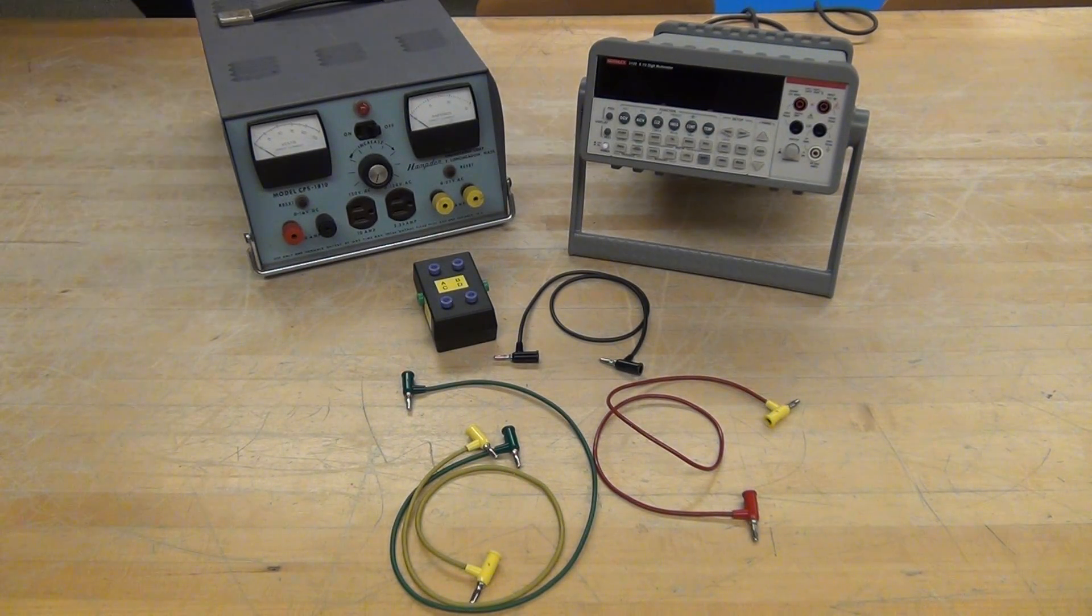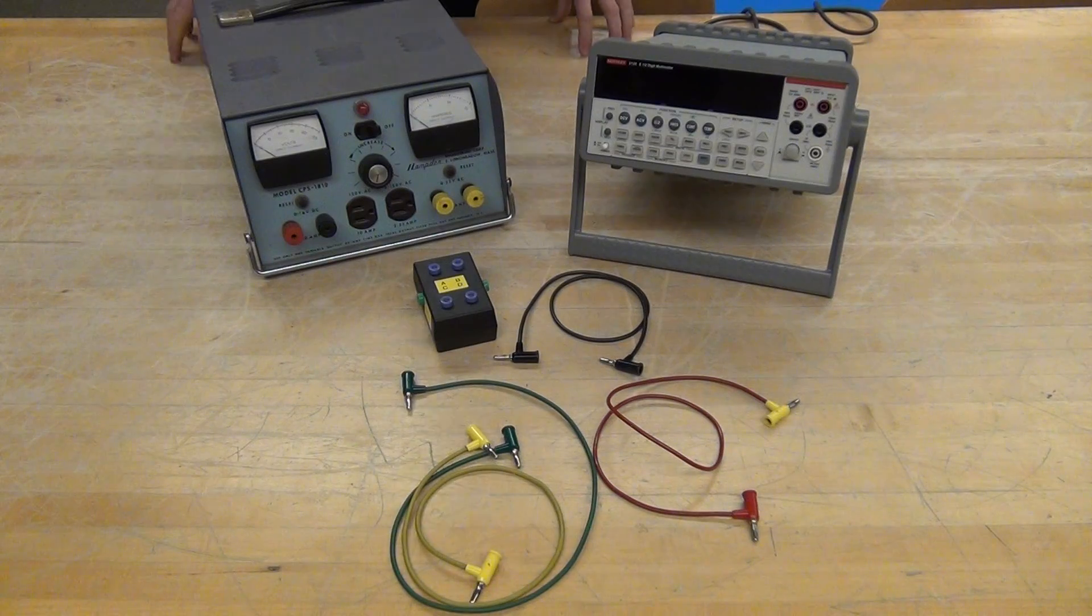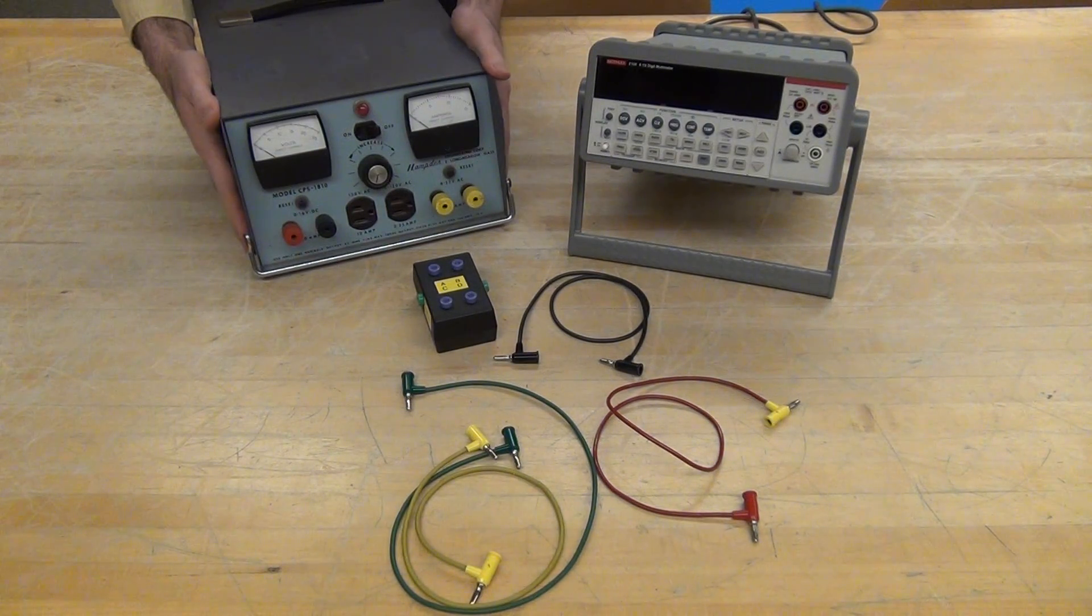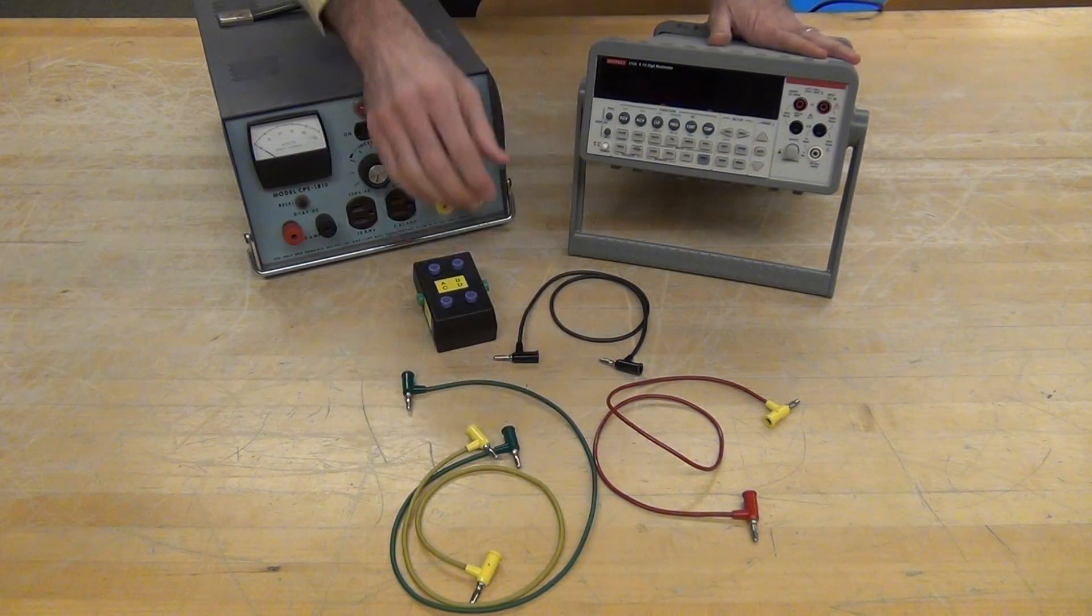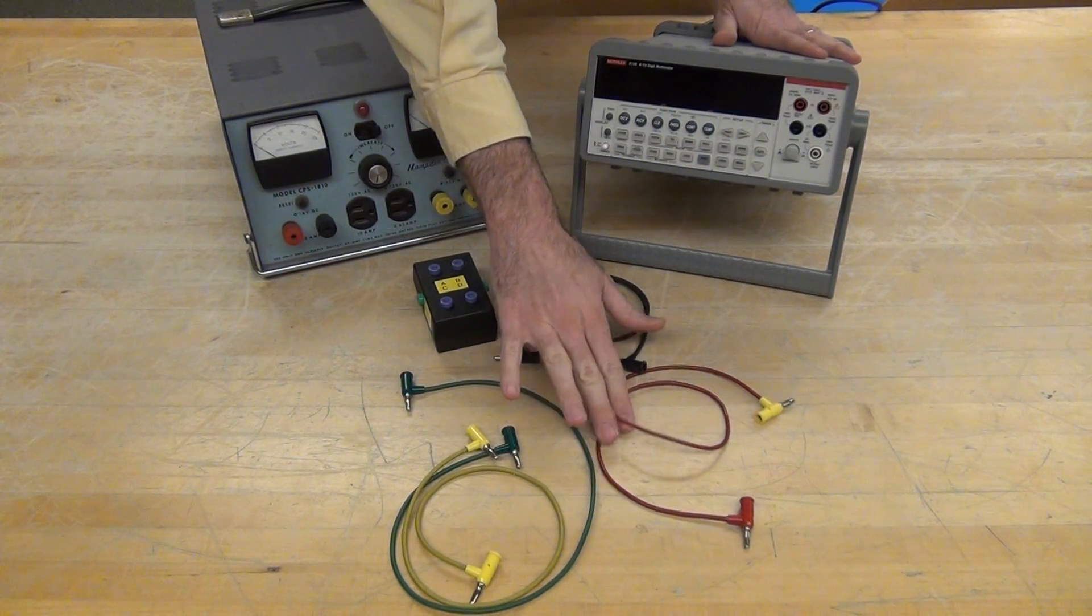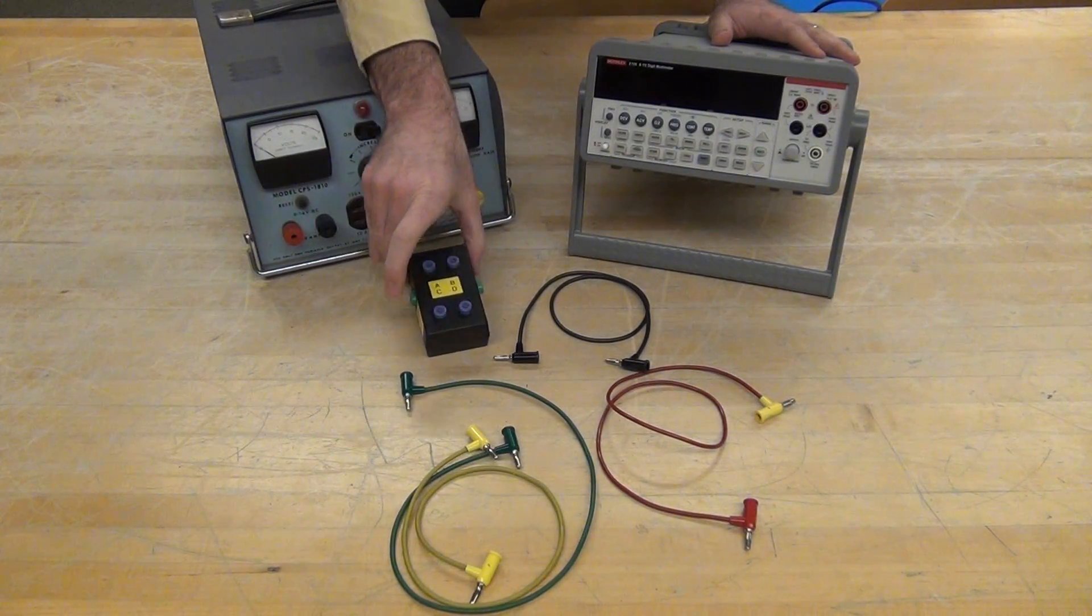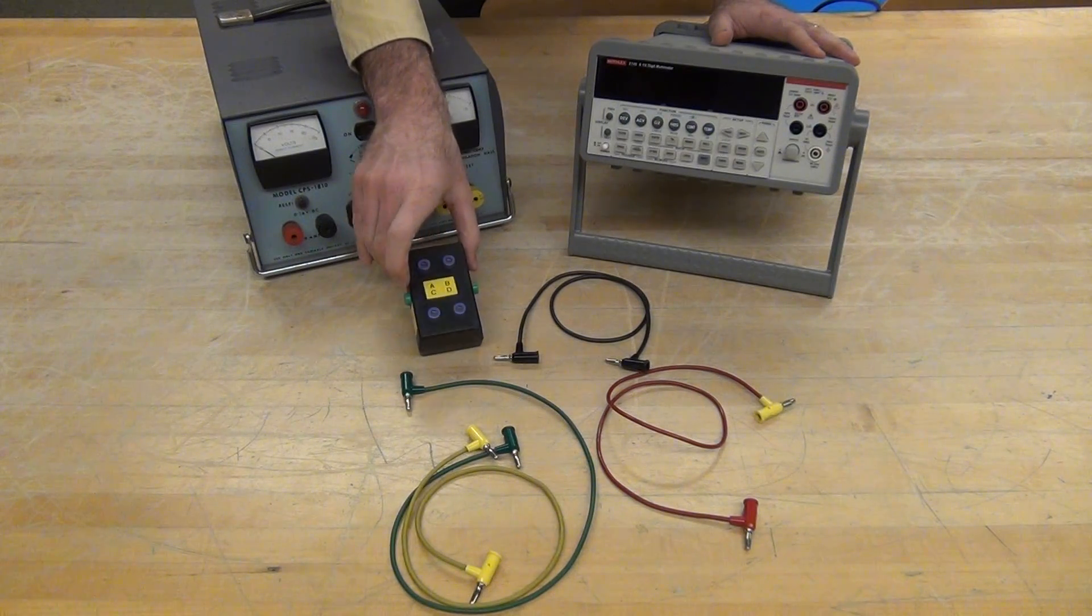These are the supplies you will have available for the Practicum Challenge. We have a Hamden power supply, a Keithley multimeter, four banana to banana wires, and then your mystery box with labels.